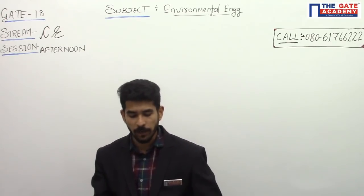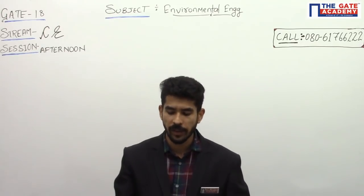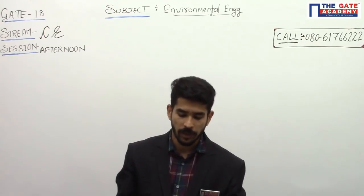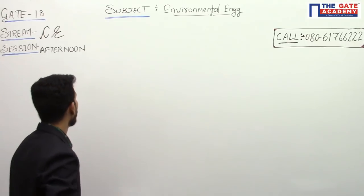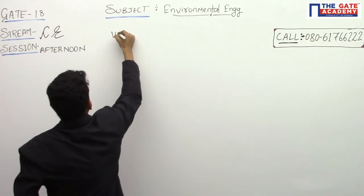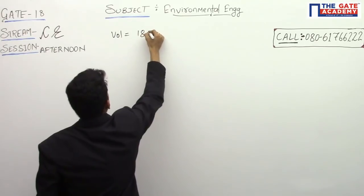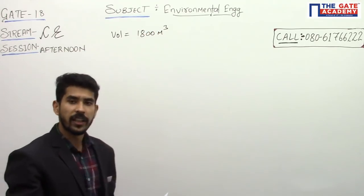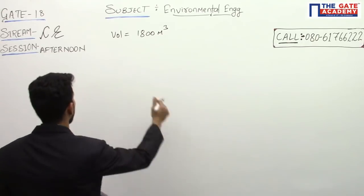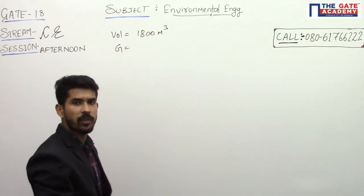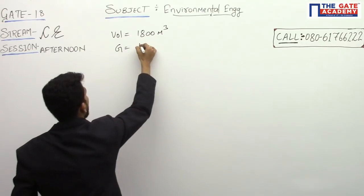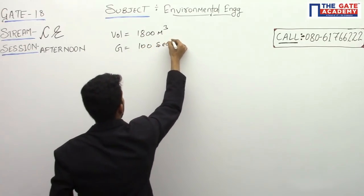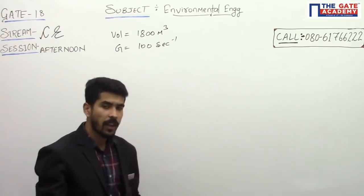mixed using paddles at an average velocity gradient of 100 second inverse. That means he is giving us the volume equal to 1800 meter cubes, and the velocity gradient, capital G temporal mean velocity gradient, as 100 second inverse.